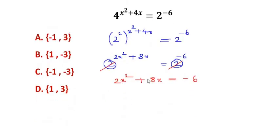We can further reduce this equation as we can see 2, 8, and negative 6 all go in the table of 2. So we can divide each one by 2 and rewrite the equation as x² + 4x equals negative 3.